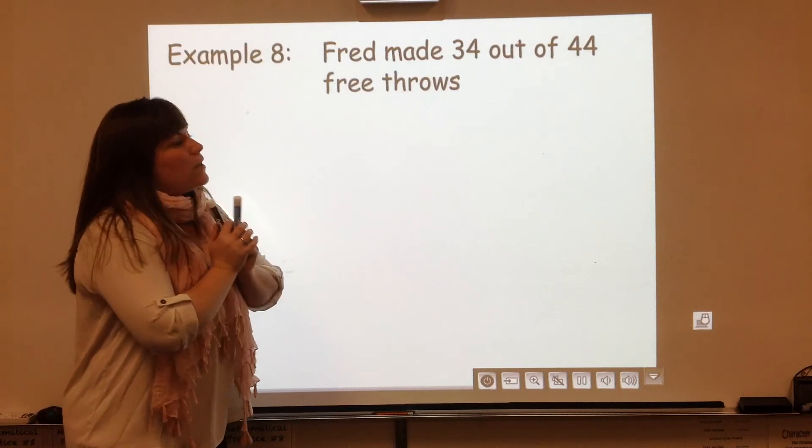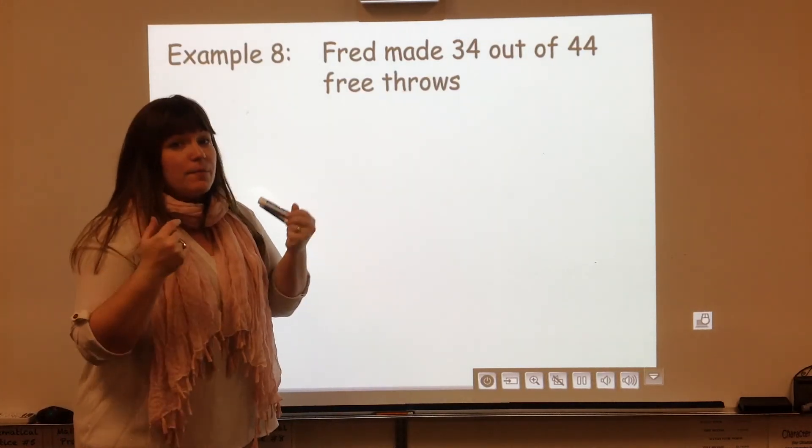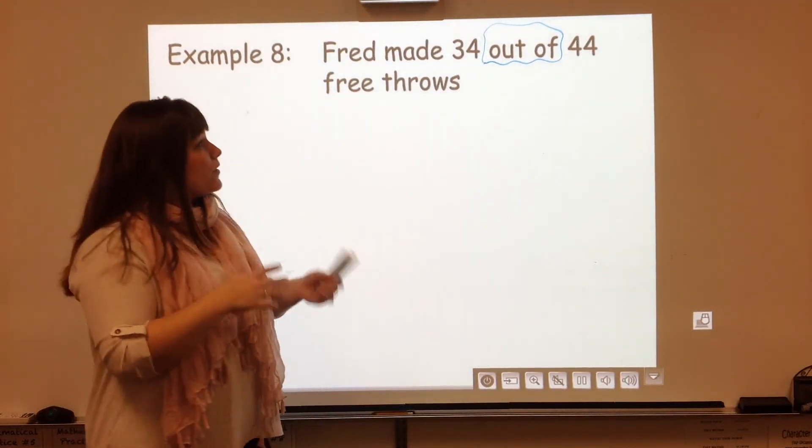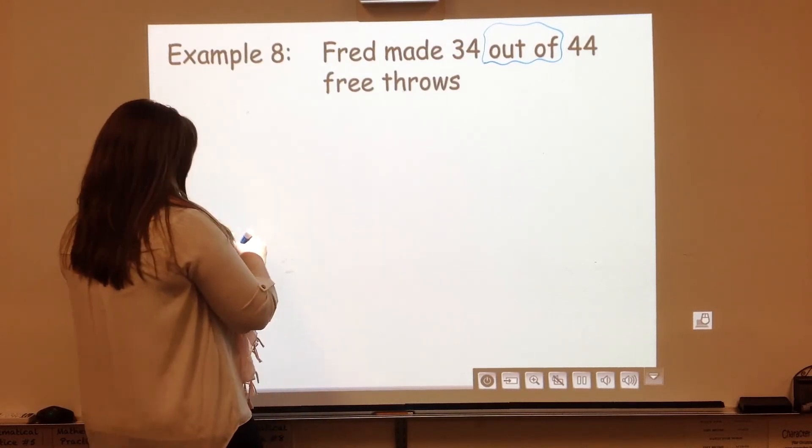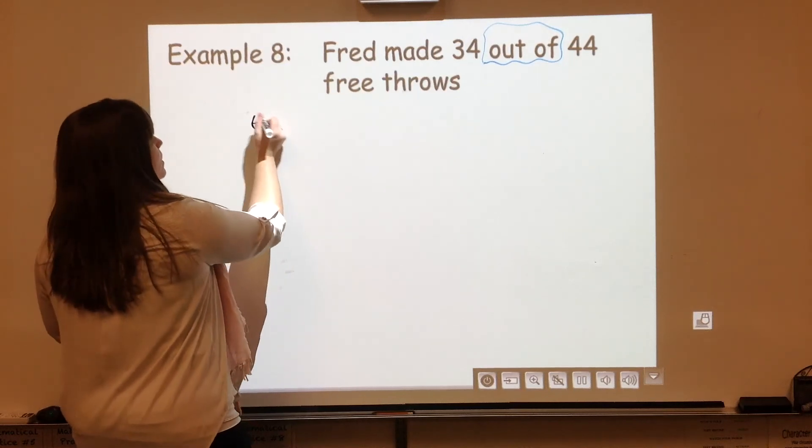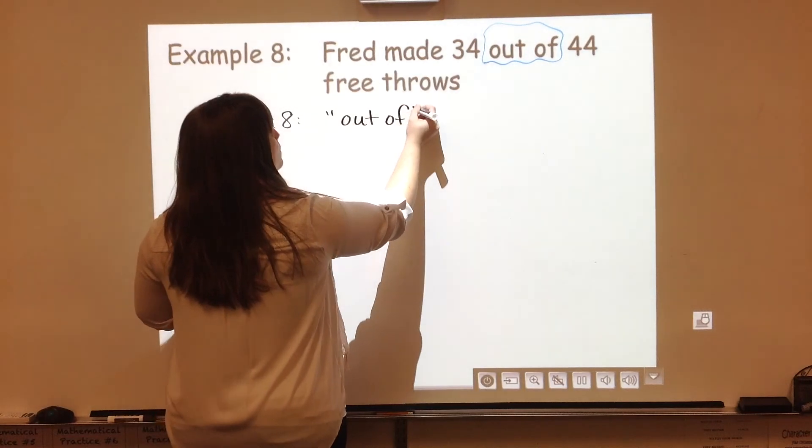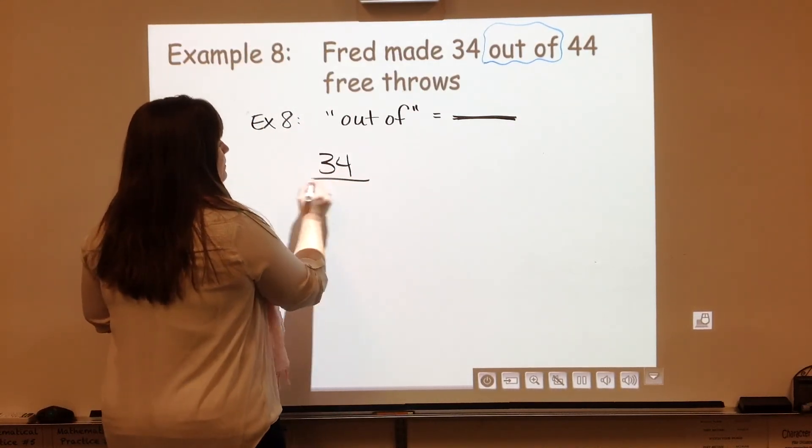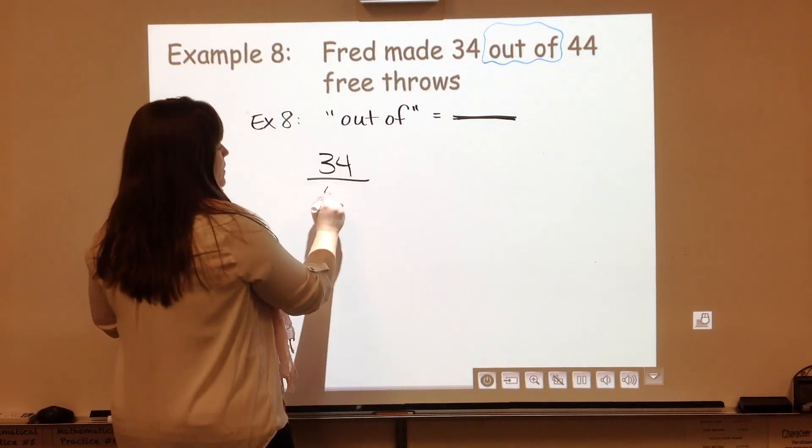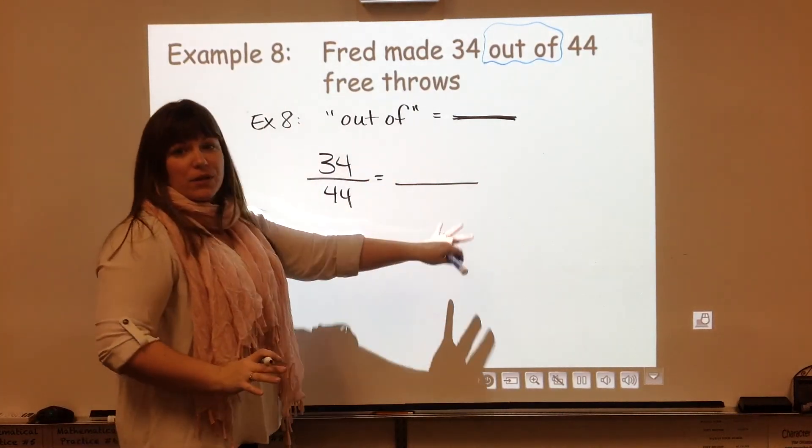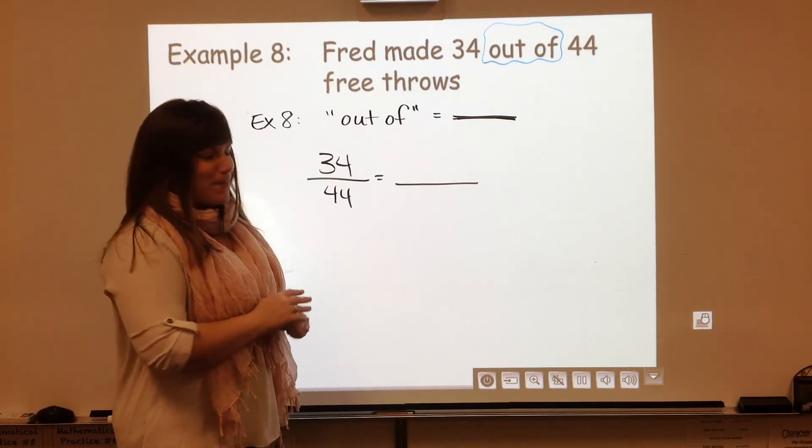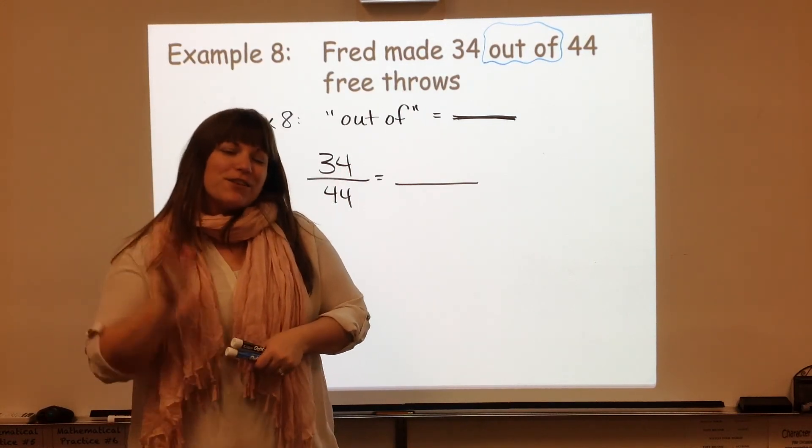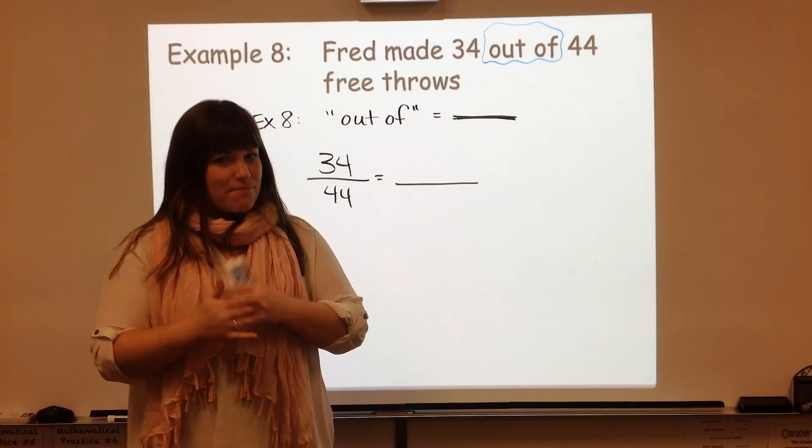Last one, I promise. This one is very important because it's different than all the rest. I'm giving you a context. This phrase right here, out of. Whenever you see that phrase, 34 out of 44 free throws, you know that you're dealing with a fraction. On example 8, I want you to write out of is that fraction bar. Whatever number is before the out of, that's the numerator. Whatever number is after the out of is the denominator. So we want to take this fraction and put it into a decimal. I'm going to let you do this one on your own. I'm not going to give you the answer. Come to class with the answer to see if you're right. I look forward to seeing you then where we will be dividing like crazy to convert fractions to decimals and see which ones are terminating or ending and which ones are repeating. See you then. Bye.